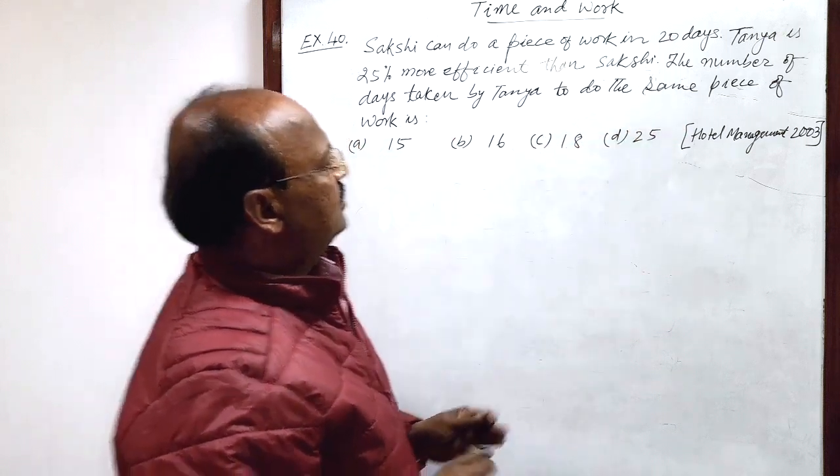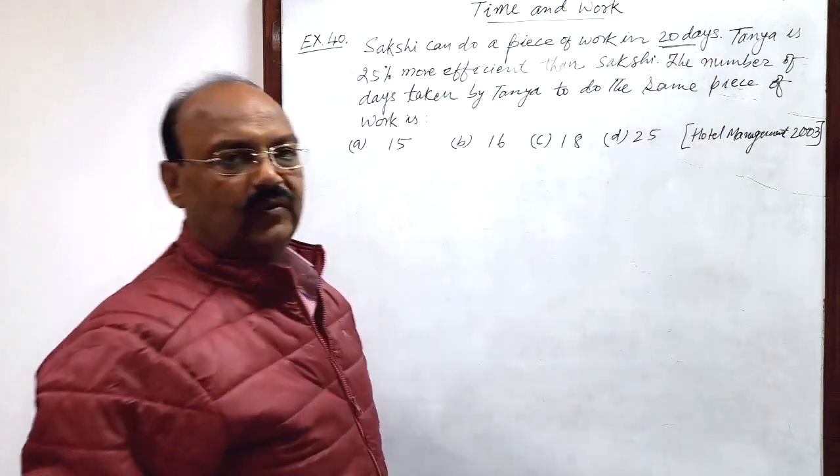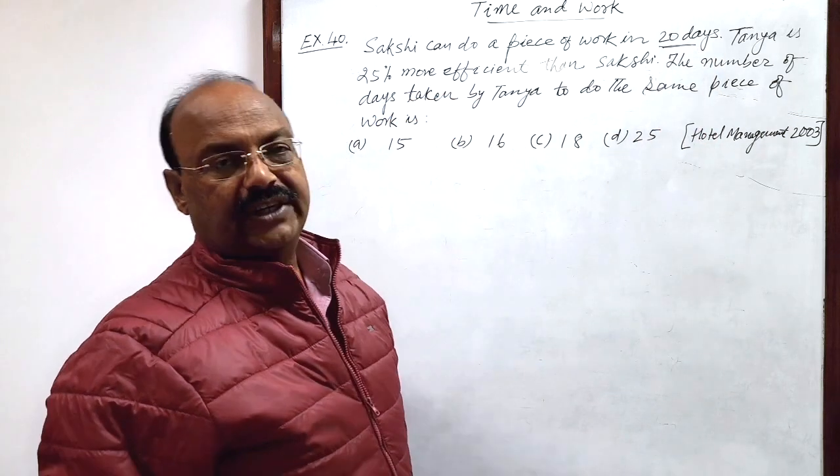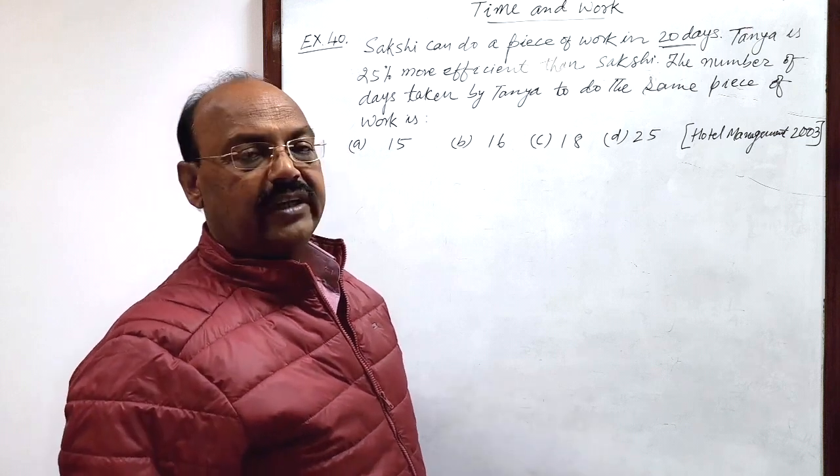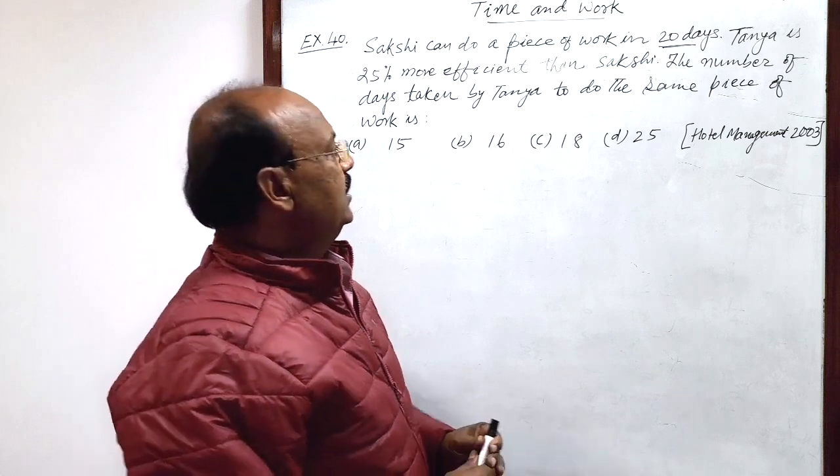You see, Sakshi is taking 20 days to complete this work and Tanya is more efficient. So naturally, Tanya will take less number of days. The solution is very simple.